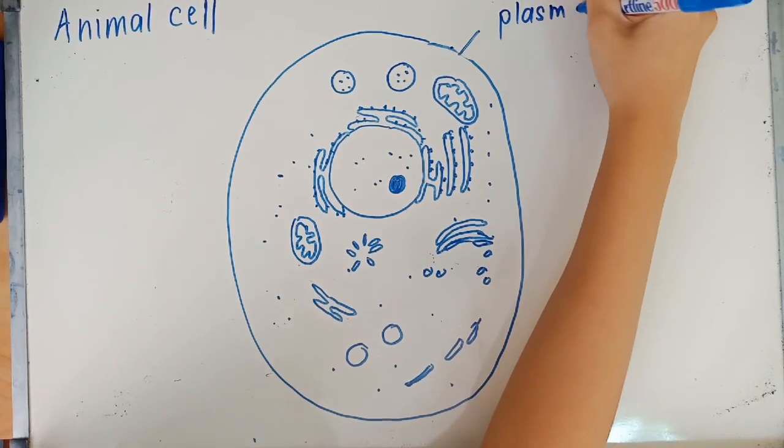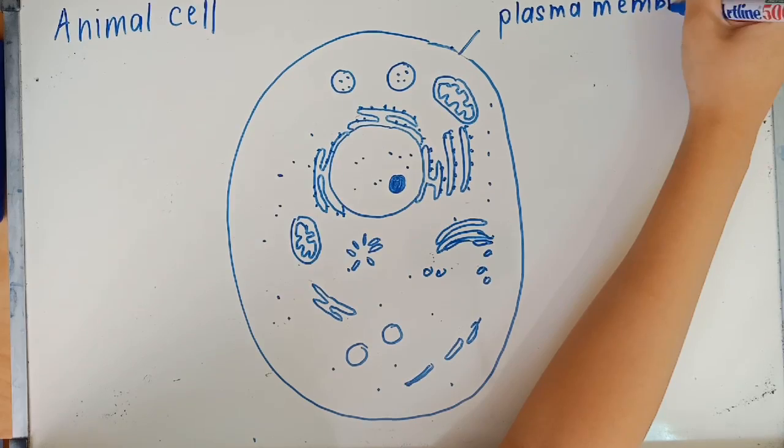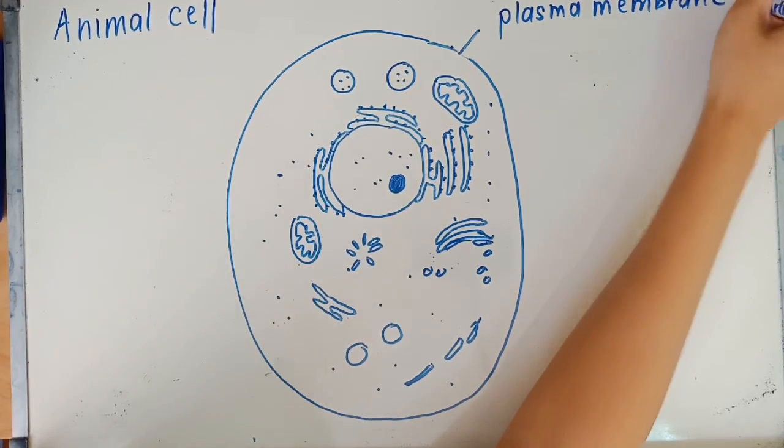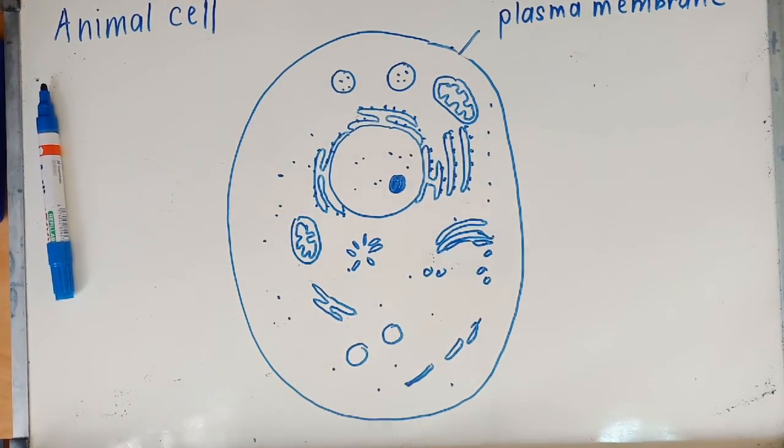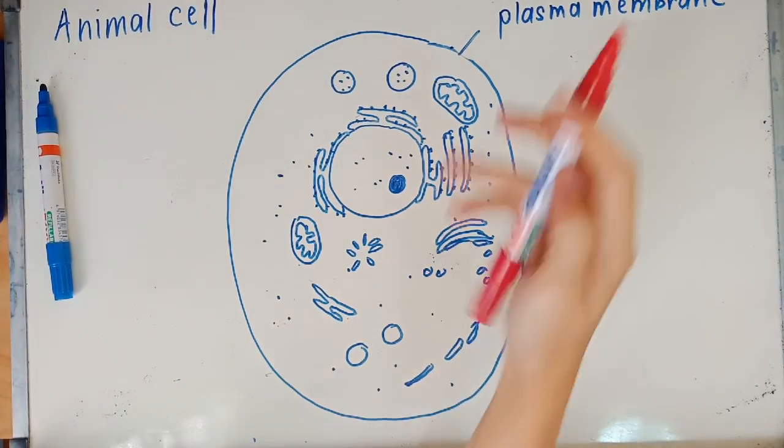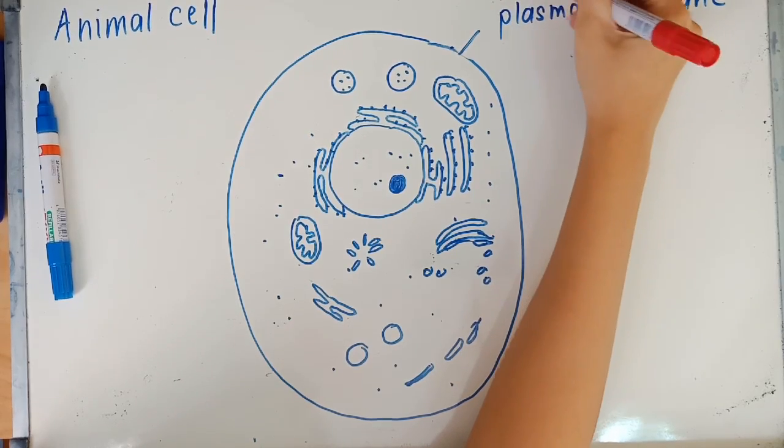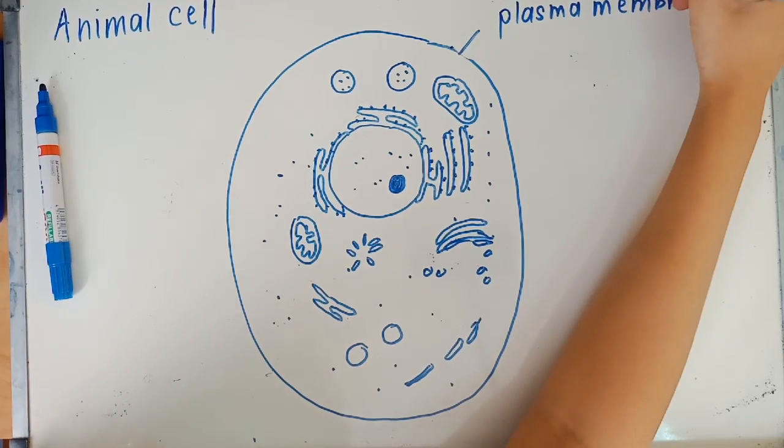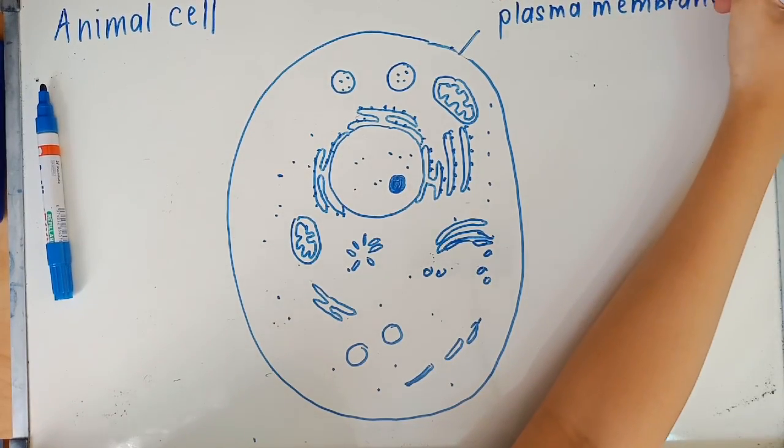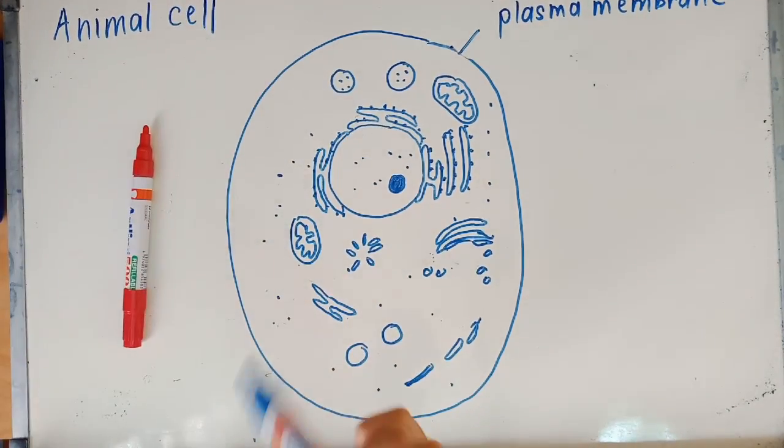Okay, so as I've said previously, you need to know the structure and the function. The first thing that we're looking at is actually the plasma membrane, which is just a thin layer made up of proteins and phospholipids. This can be an objective question - they can give a few substances and ask you what is plasma membrane made of.